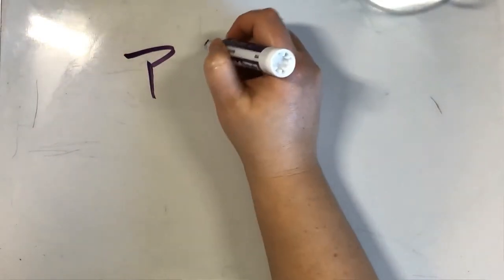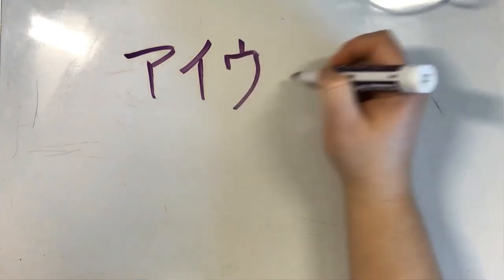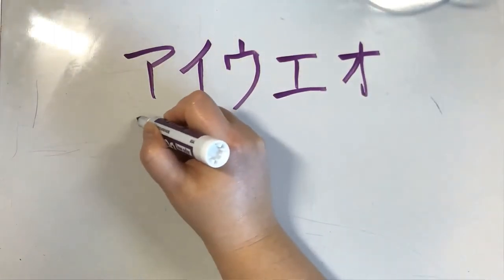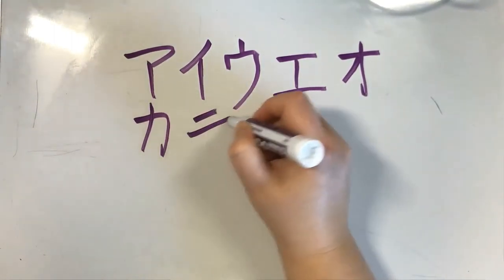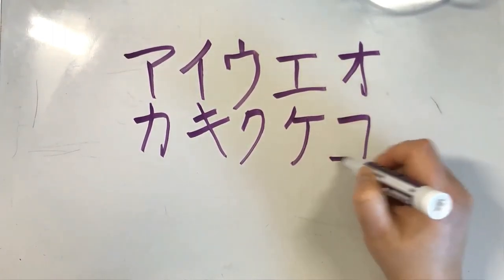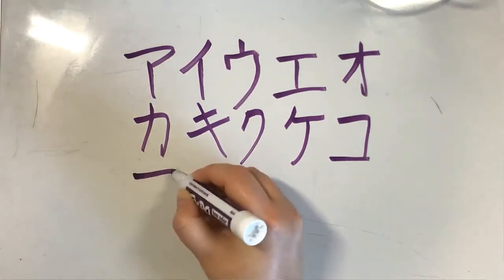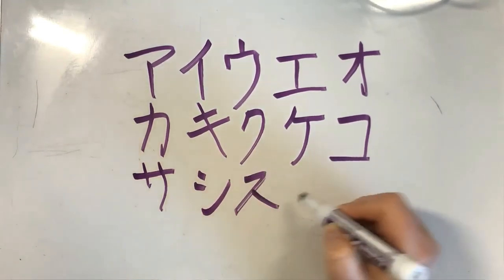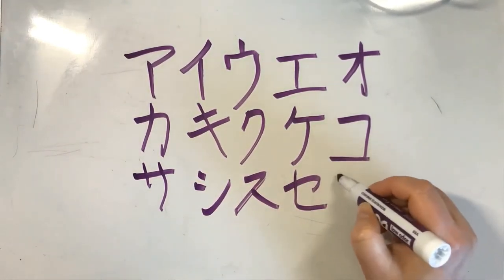We learned: a, i, u, e, o, ka, ki, ku, ke, ko, sa, shi, su, se, and so. I hope you enjoyed this video — stay tuned for tomorrow when we'll be learning our next 15 characters. Until then, see you later!